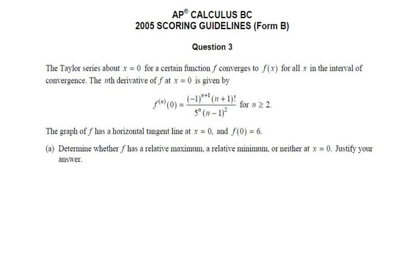This is the 2005 Form B BC test, question number three. This is a calculator question, and it's good for you to see exactly how much you might use a calculator on a problem like this. The Taylor series about x equals zero—so that tells us we're working with a McLaurin series—for a certain function f converges to f(x) for all x in the interval of convergence.